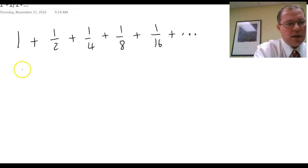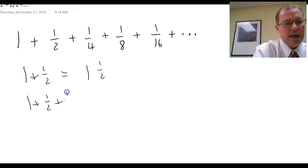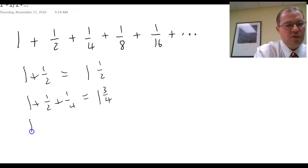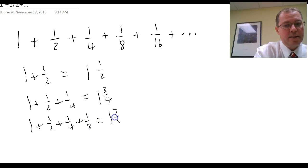She noticed that 1 and a half was 1 and a half, so she summed the first two terms. And then she summed the first three terms, 1 and a half and a quarter, and she got 1 and 3 quarters. Then she summed the first four terms, 1 and a half and a quarter and an eighth, and she got 1 and 7 eighths.